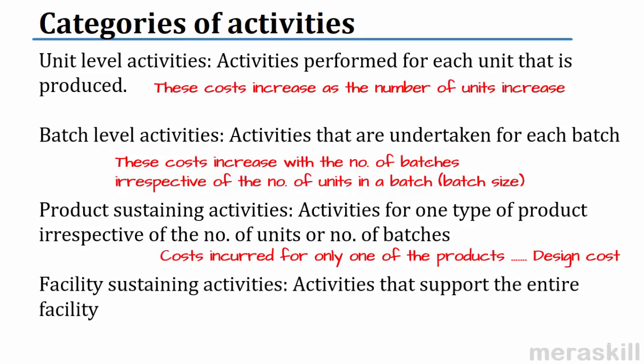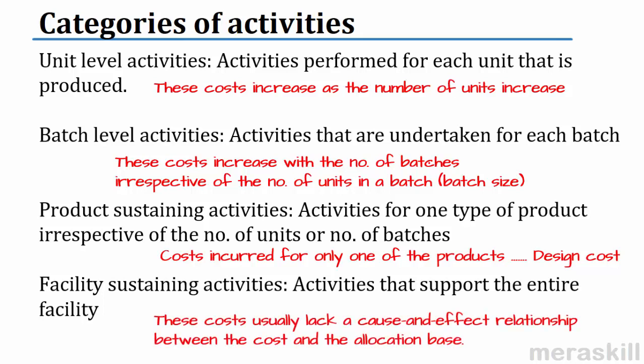And then you have facility sustaining activities, which support the entire facility. Like security of the entire place. These frankly cannot be properly allocated — there may not be a cause and effect relationship between the cost and the allocation base. So, these are the different cost hierarchies: unit level, batch level, product level, and facility level.